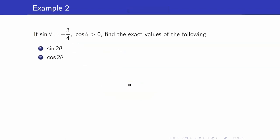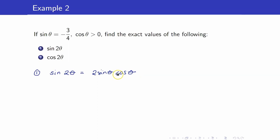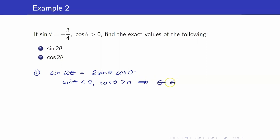Suppose that sine theta is negative 3 fourths, cosine theta is positive, and we want to find the exact values of the following. For number 1, we want sine of 2 theta. From our formula, sine 2 theta equals 2 sine theta cosine theta. We already have the value for sine theta — that's negative 3 fourths. We just have to get the value of cosine theta. We use the techniques from our previous video, wherein we get our x, y, r. First, we have to determine the quadrant of theta. Since sine theta is negative and cosine theta is positive, that means theta is in quadrant 4.